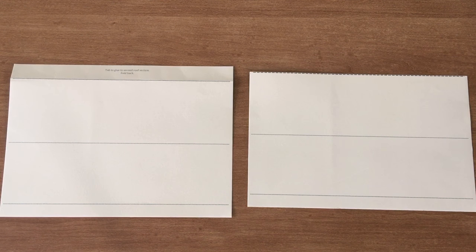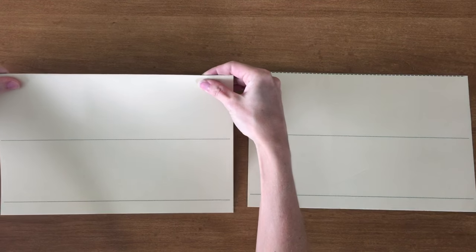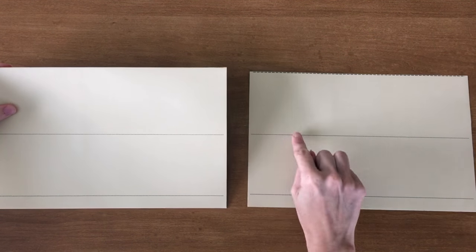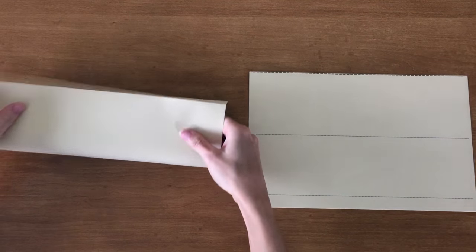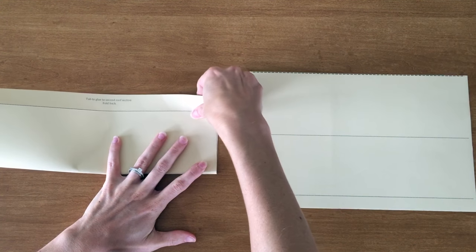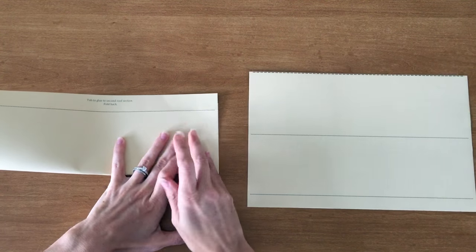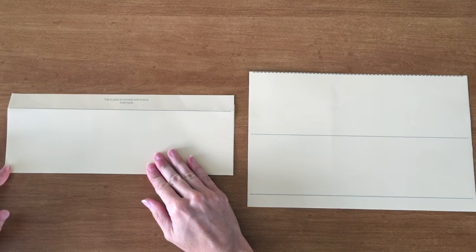These are the two roof pieces. Folding them is going to be a little bit different. One piece has a tab which you're going to fold backwards. I already did that. You're also going to be folding backwards on the dotted lines in the middle of both roof pieces. So again, just kind of line up your edges so you know that you're doing it straight and press down all the way across.